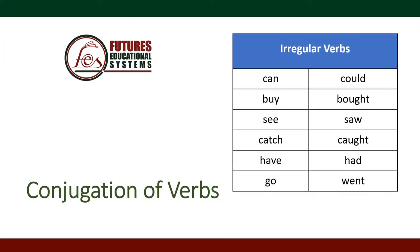Here we are going to learn some irregular verbs from our conversation. Irregular verbs are tricky, so keep them in mind. In the past simple tense, the second form changes: can/could, buy/bought, see/saw, catch/caught, have/had, go/went.